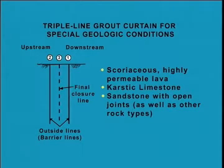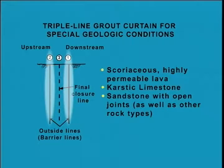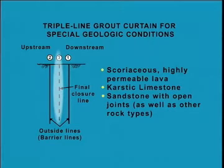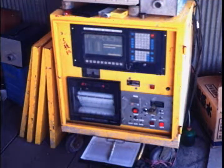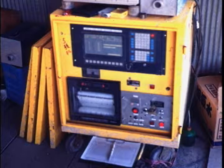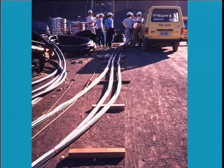In scoriaceous, highly permeable lava, in karstic limestone, or in sandstone or other rock types with very open, very permeable joints, my philosophy is to provide a triple-line curtain. The outside lines are grouted first through primary, secondary, and tertiary stages to act as barrier lines confining the grout injected in the central line. The final closure in this central line may require up to quaternary holes. The trend of employing field computers to control grouting rates, quantities injected, and grouting pressures is very welcome and of value to the grouting engineer. Grouting statistics can also best be displayed and stored by computers.